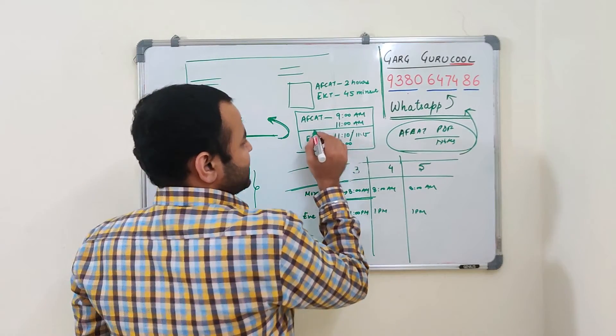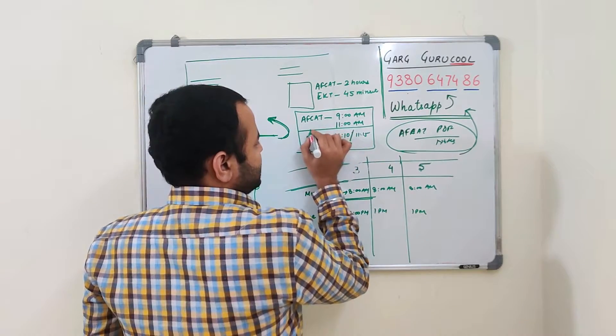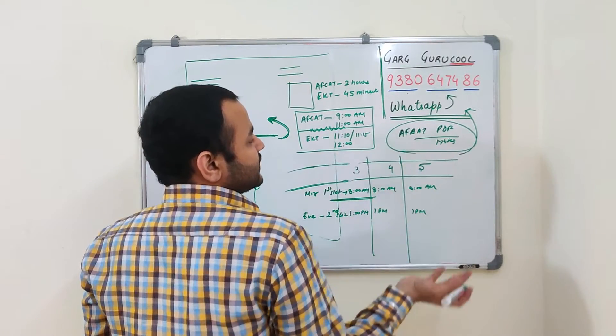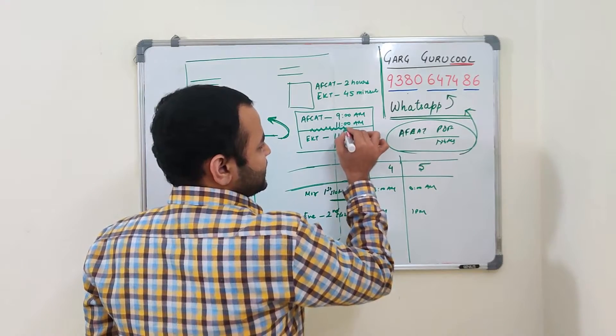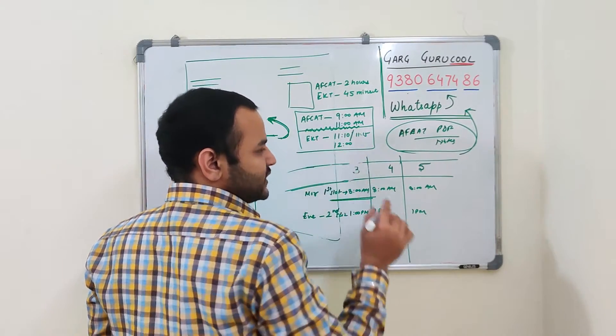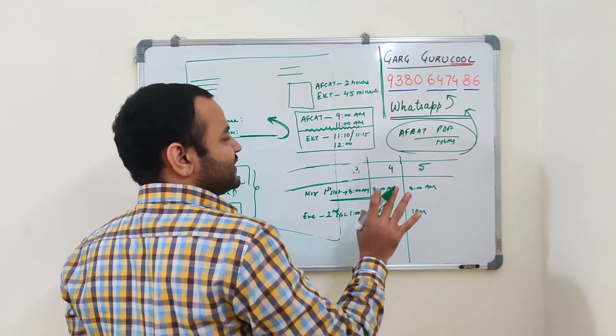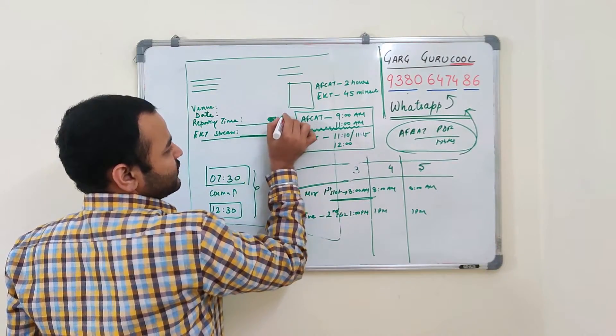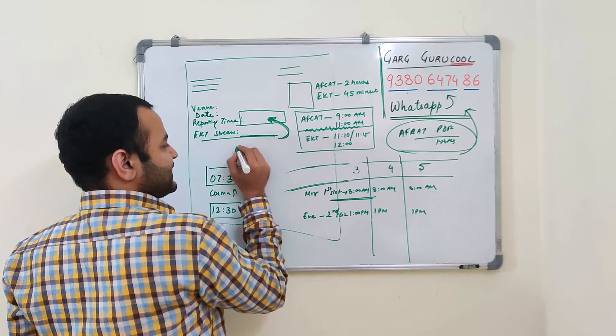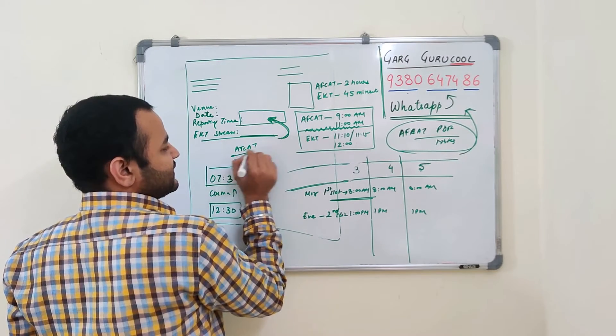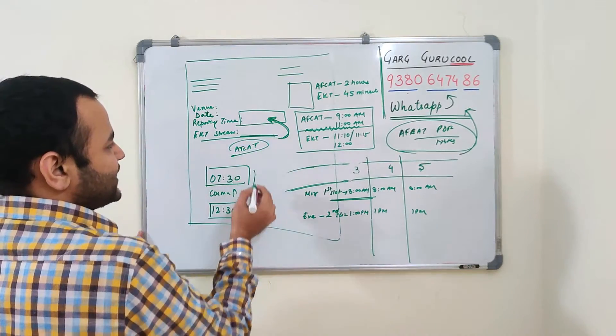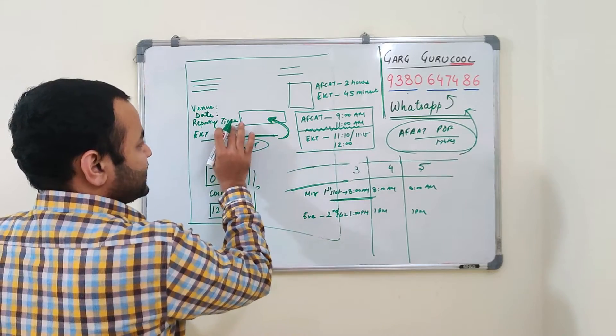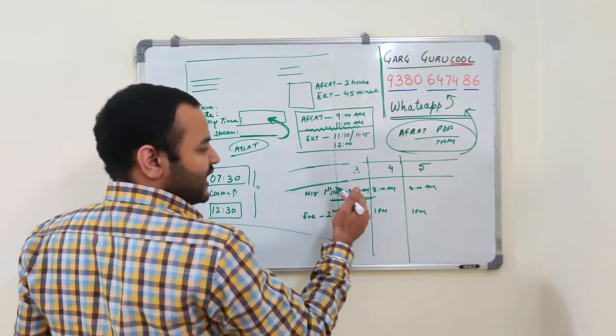And it will get over at 12 o'clock in the afternoon. This is for morning shift. So if you see, there will be just 5 to 10 minutes break. They will ask your rough sheets and they will give you EKT. They will start your EKT process. So this reporting time which is mentioned over here is AFCAT starting time. There is no EKT starting time. This is the reporting time for you.